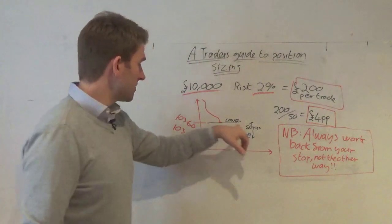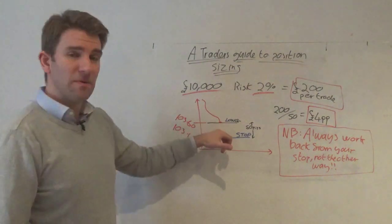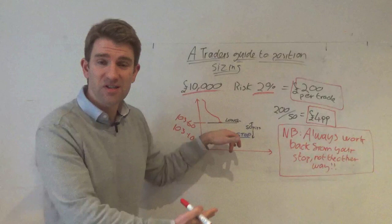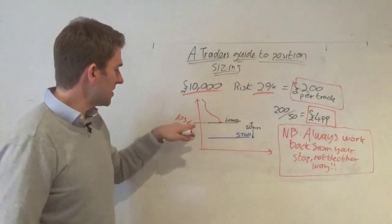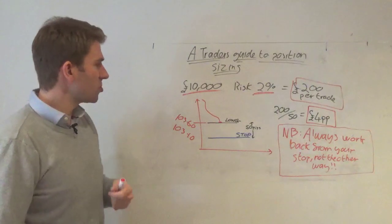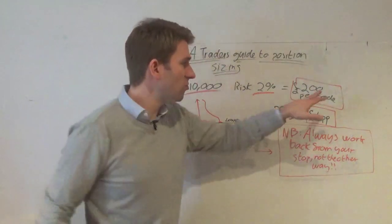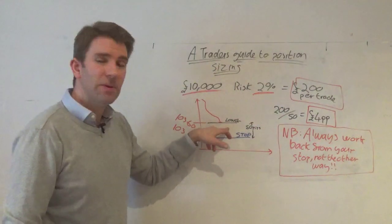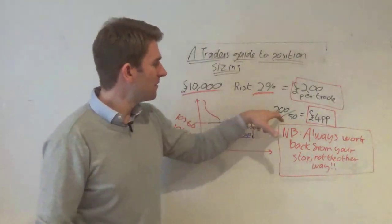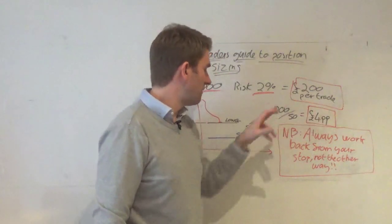Okay so there we've got our stop and it's 50 pips in this instance, or it could be 50 ticks if we trade something else or 50 cents, whatever it may be, 50 incremental moves from the distance from our long to our stop loss point. So we go 200 which is the total risk we're prepared to take divided by the number of pips between our entry and our stop, 50, and that's giving us 4.